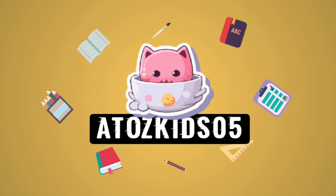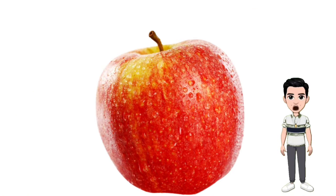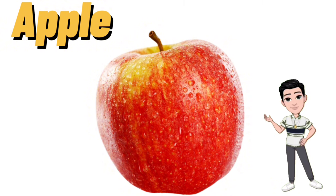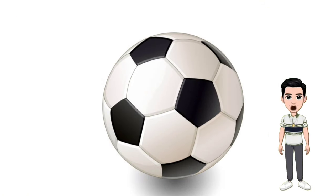Hello kids, welcome to my channel. In this video we will learn about the alphabet. A for apple. What is this? Yes, this is an apple. An apple is a round fruit with red or green skin and a white interior. It grows on apple trees and is often eaten raw or used in various culinary dishes and beverages.